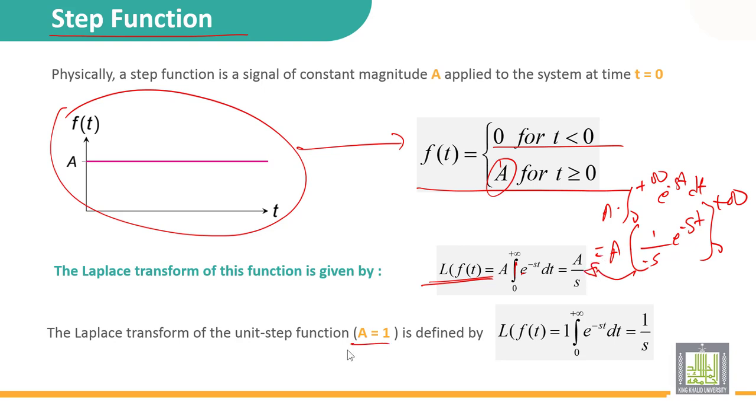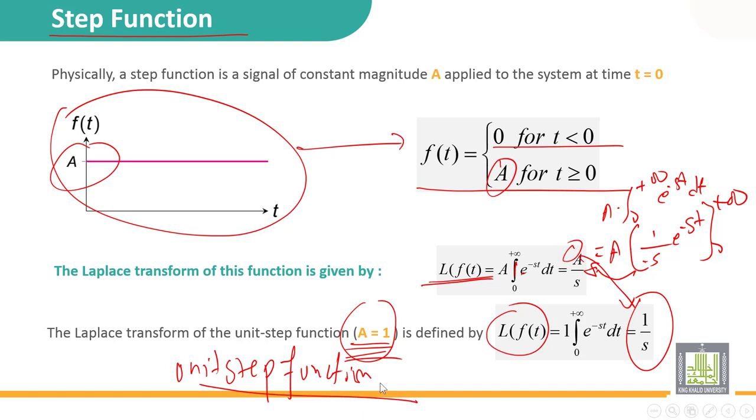If A equal to one, if A equal to one, that means if the magnitude of the function f(t) is equal to one, we call it unit step function.